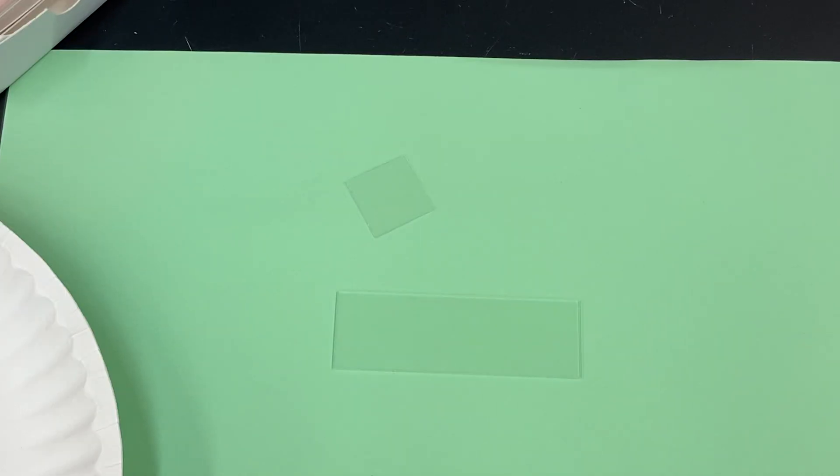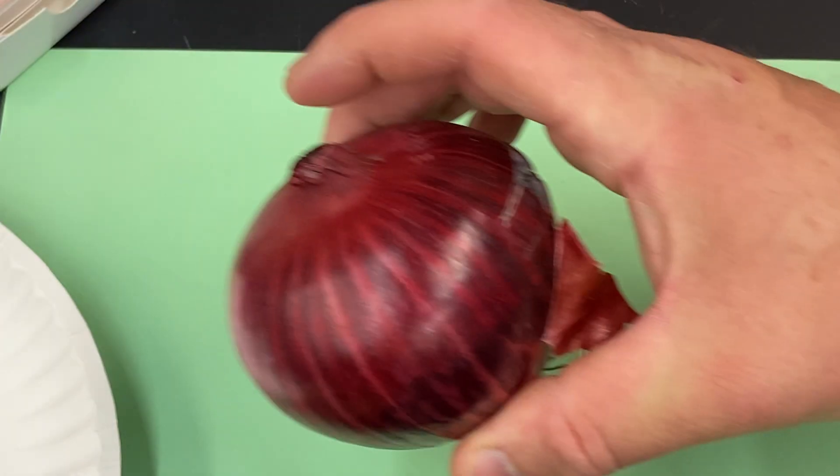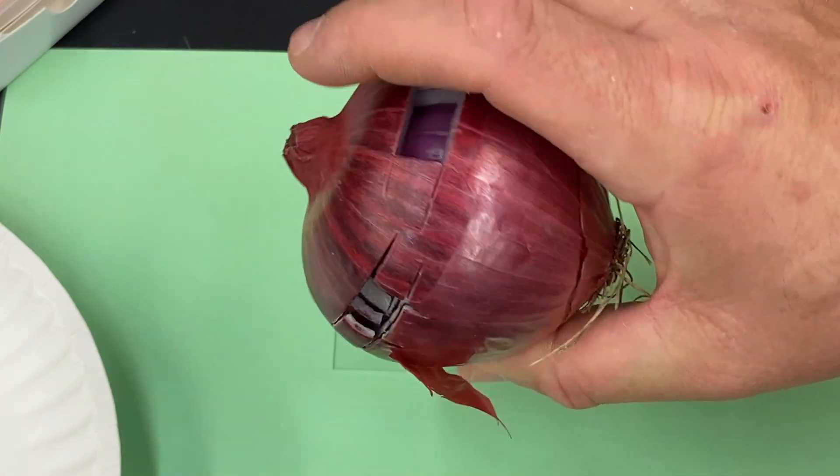The second portion of the diffusion through a membrane lab involves making a slide of our friend the red onion. I've cut some out already, some nice fresh red onion. So here's what we're going to do. I'm going to make the slide so you can watch how to properly create a wet mount.